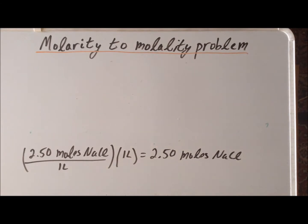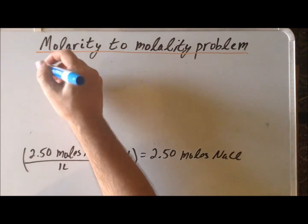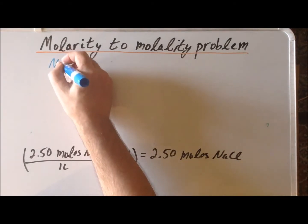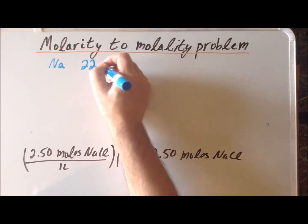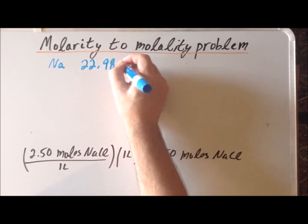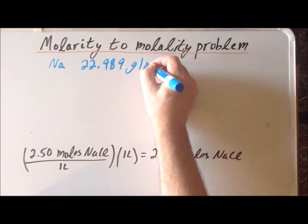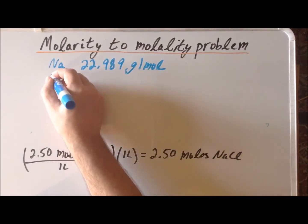Next, we want to calculate the molar mass of sodium chloride. We're going to use the fact that the atomic weight of sodium, which we get from our periodic table, is 22.989 grams per mole. And for chlorine, this is going to be 35.453 grams per mole.